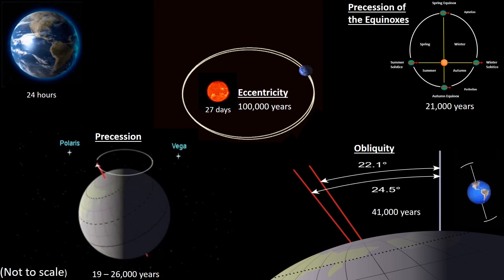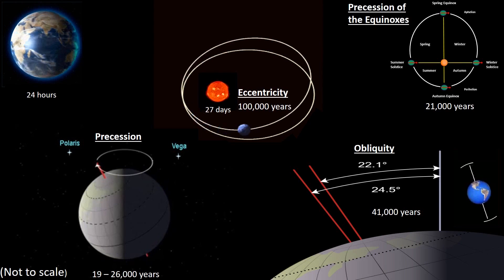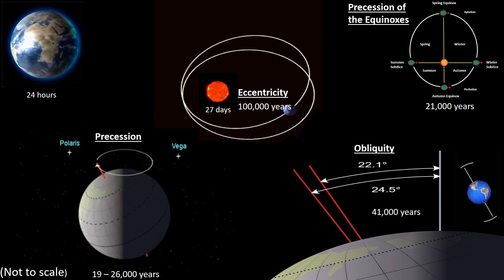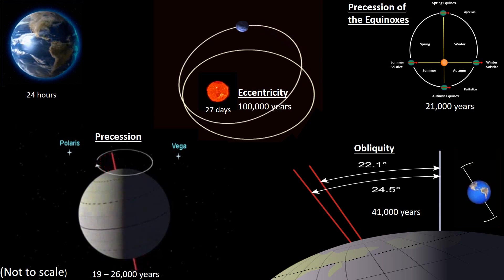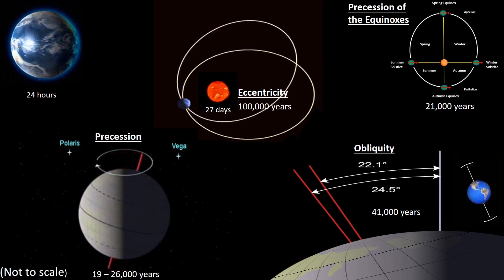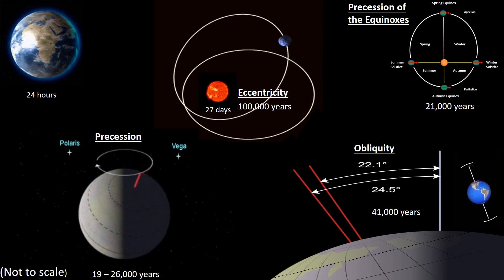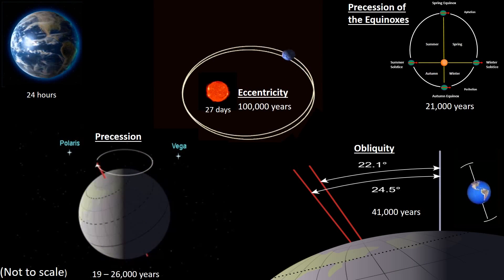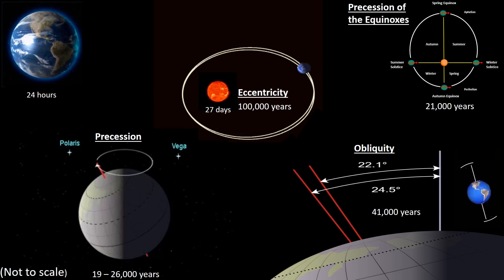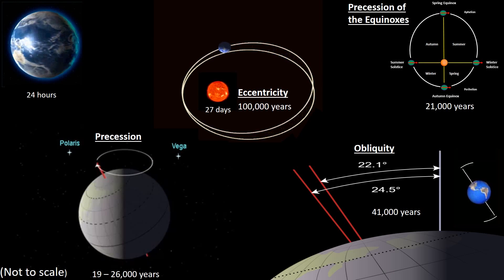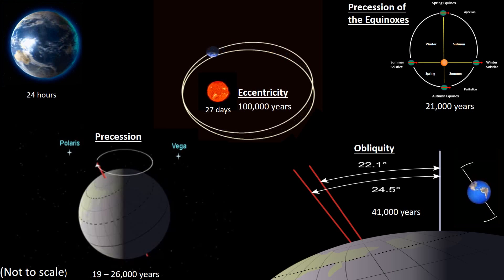The combined effects cause the seasons to gradually cycle relative to the perihelion and aphelion, over a time span of about 21,000 years.